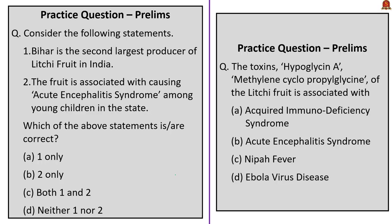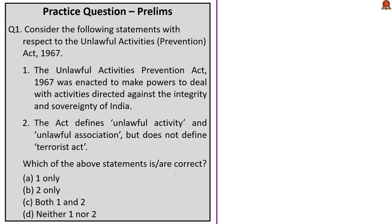Let us move on to the practice question discussion session. The first question is about the Unlawful Activities Prevention Act of 1967 with two statements. The first statement is correct as it is part of the statement of objects and reasons of the act based on recommendations of the Committee of National Integration and Regionalism. The second statement says the act defines unlawful activity and unlawful association but does not define terrorist act. However, in our analysis today, we saw that the act also defines terrorist act in Section 15. The terms unlawful activity and unlawful association are explained in Sections 2(o) and 2(p). Therefore, statement 2 is wrong, and the correct answer is option A — only statement 1.